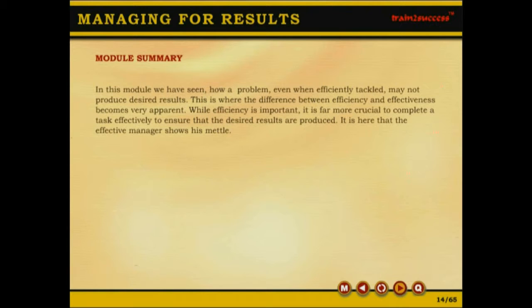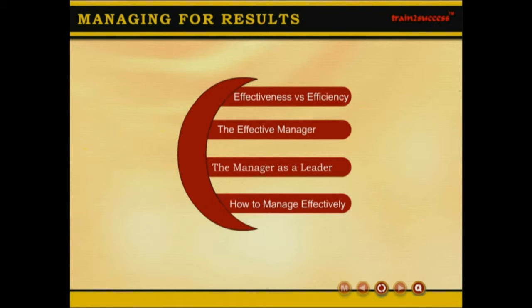Let's review what we have learned about managing for results so far. In this module, we saw how a problem, even when efficiently tackled, may not produce desired results. This is where the difference between efficiency and effectiveness becomes very apparent. While efficiency is important, it is far more crucial to complete a task effectively to ensure that the desired results are produced. It is here that the effective manager shows his mettle.